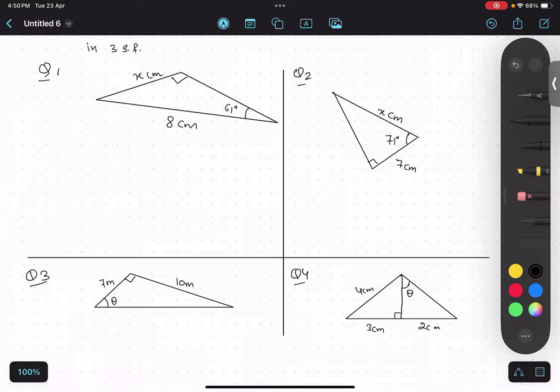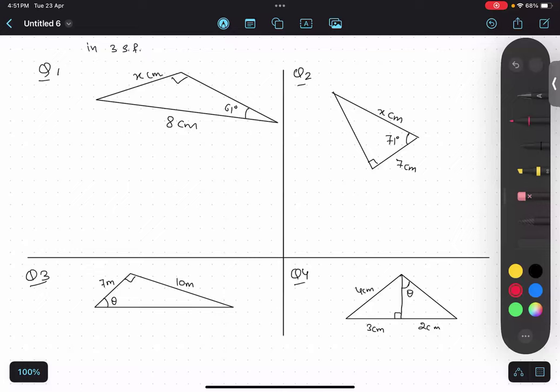So try to do these questions. Step number one is to first of all identify what is opposite, what is hypotenuse and all that. Can you tell me what is opposite over here in the first question? Opposite will be x, so this is opposite. So write down opposite with a different color pen for yourself in the paper also. And what is hypotenuse?